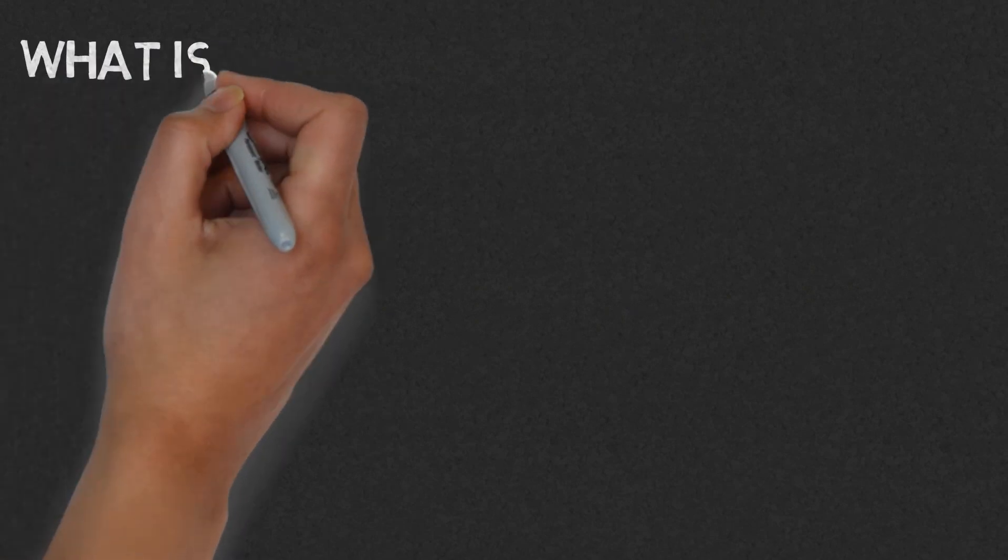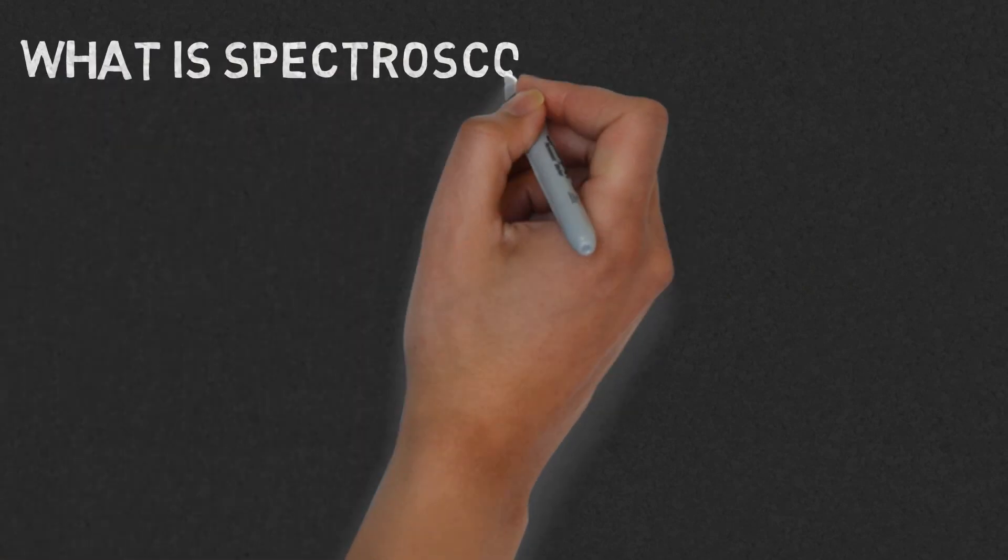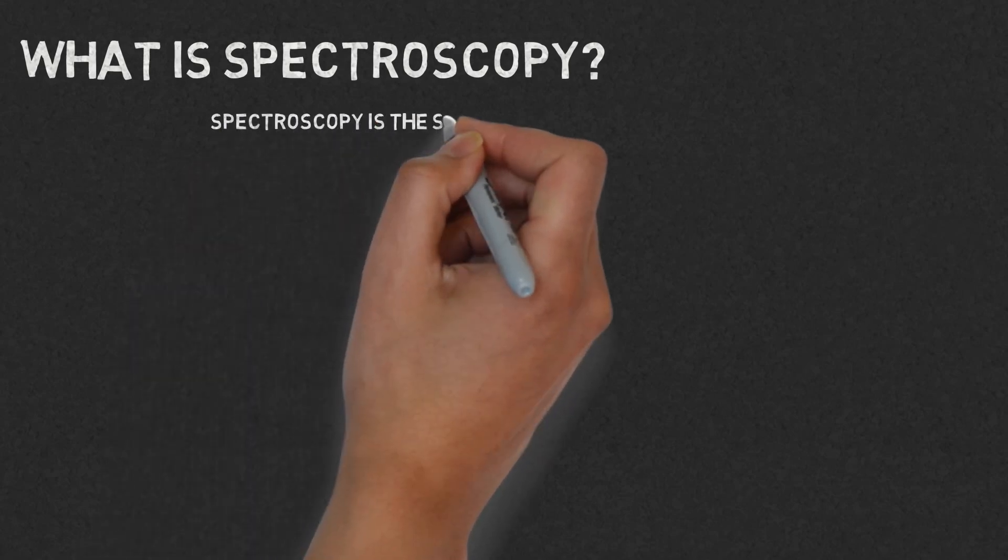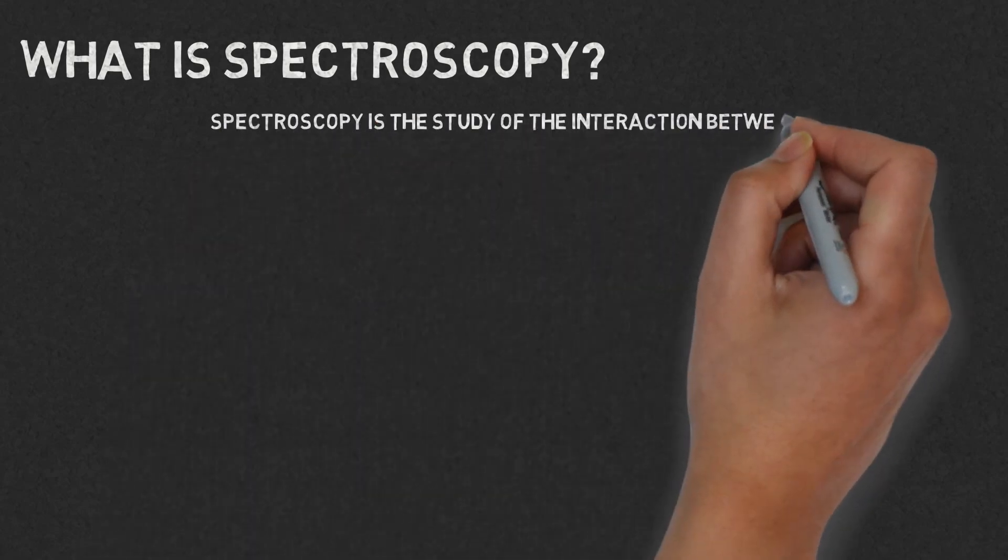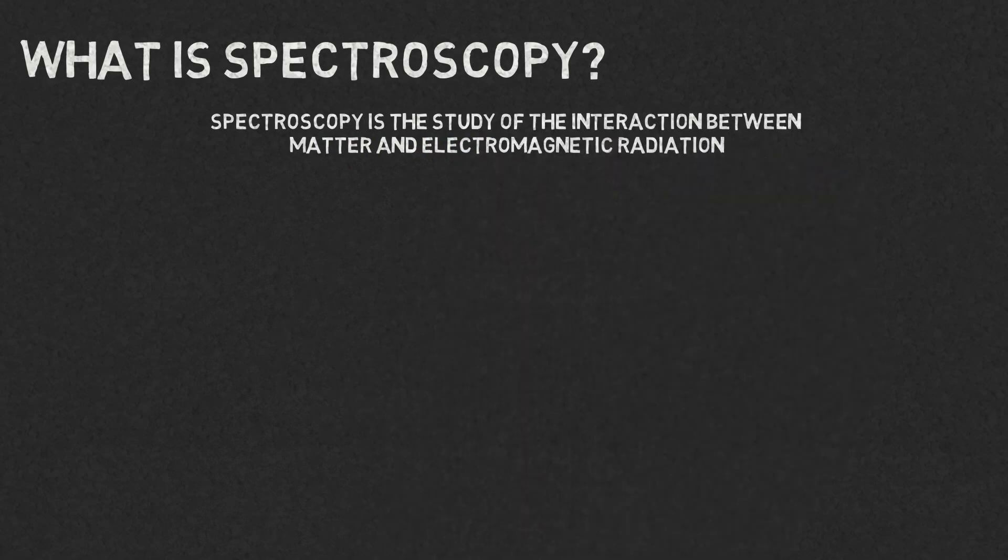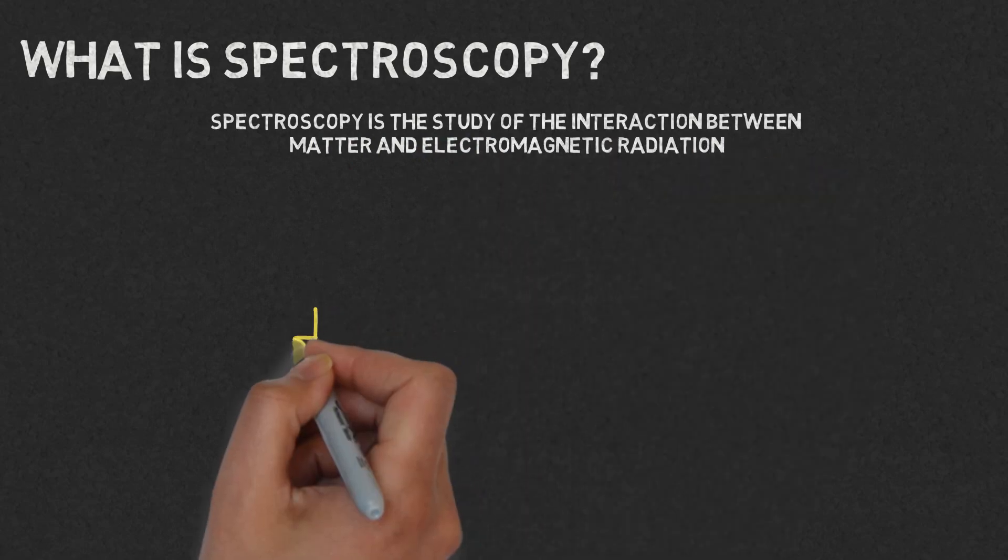So, let's start by the question: what is spectroscopy? In simple words, spectroscopy is the study of the interaction between matter and electromagnetic radiation.